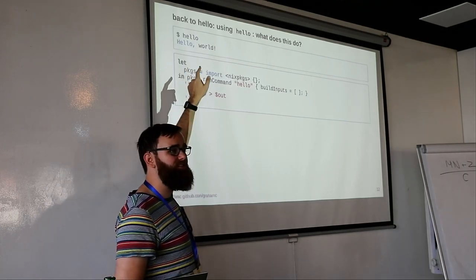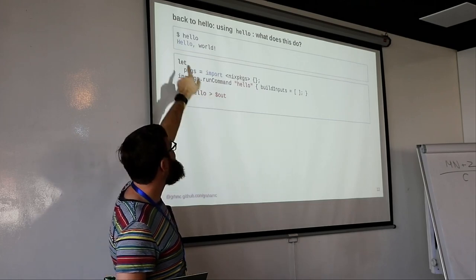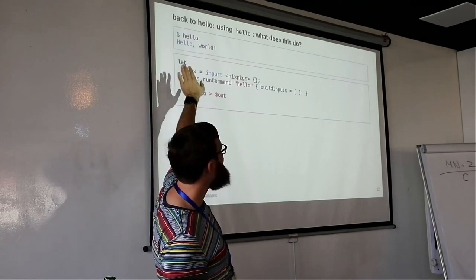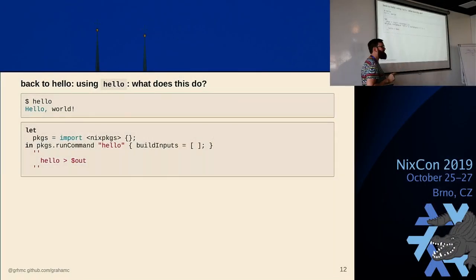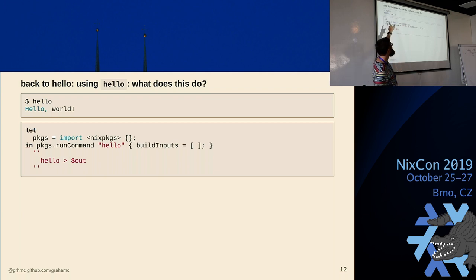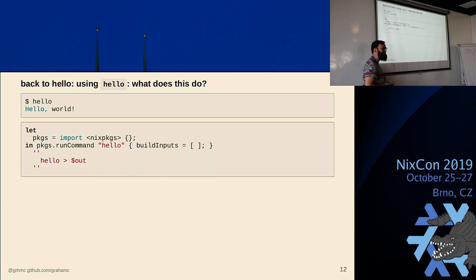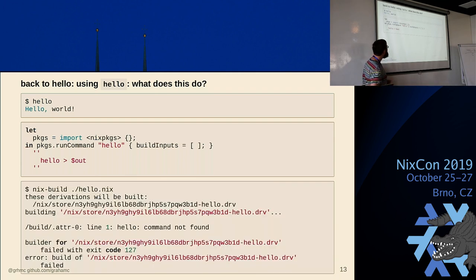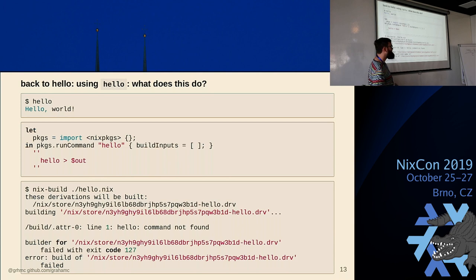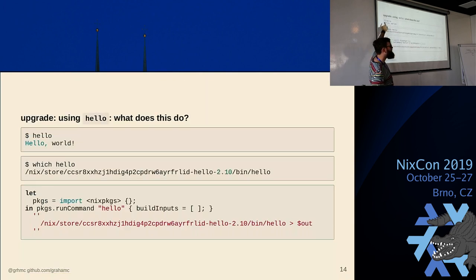Does everybody know GNU hello? It's a very popular package. When you run GNU hello in your local language it outputs hello world. It's actually quite a complicated package. Here, instead of echoing hello, you run the command hello and pipe that to out. I have it installed in my system. What's going to happen when I build it? It will fail — hello command not found. It needs hello as a build input.